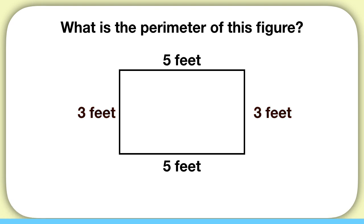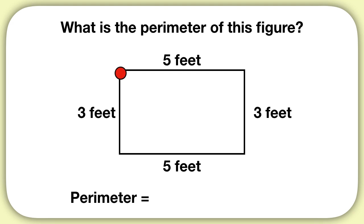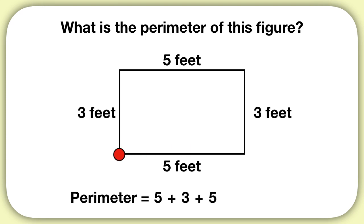Now that we've labeled our sides, we can start finding the perimeter. We can think: if we started here, we would move 5 feet, then we'd move 3 feet more, then we'd move 5 feet more, then we'd move 3 feet more. When you add up all this distance, you get a perimeter of 16 feet.